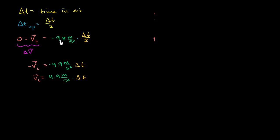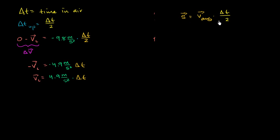Or you could say it's going to be 9.8 meters per second squared times half of the time we're in the air — either of those gives you the same calculation. So let's figure out the distance we travel in the time up, which gives us our peak distance. Displacement is equal to average velocity times change in time. The change in time we care about is the time up, so that is delta t over 2, our total time divided by 2.